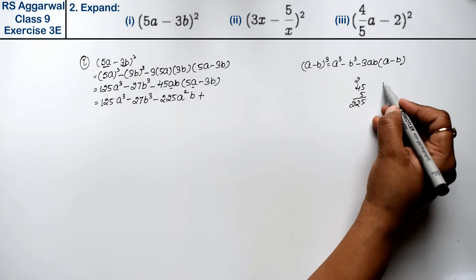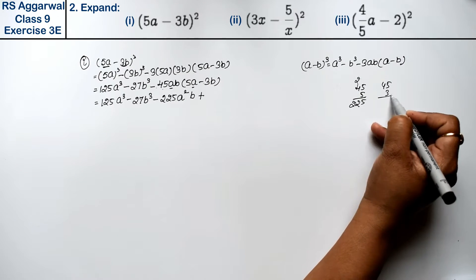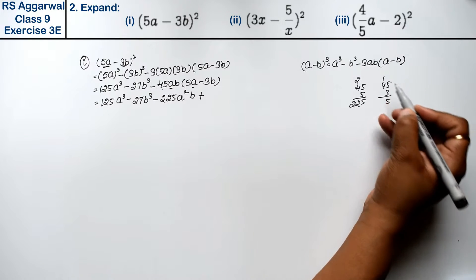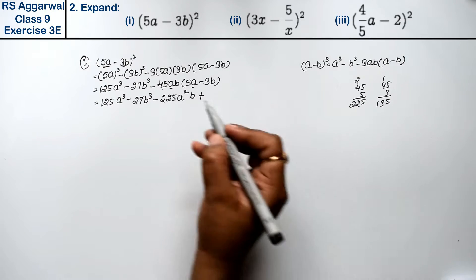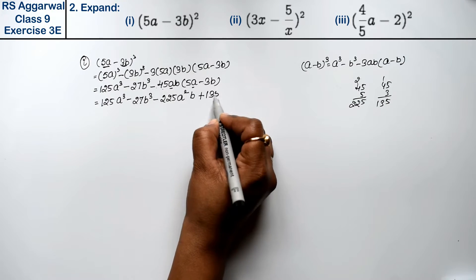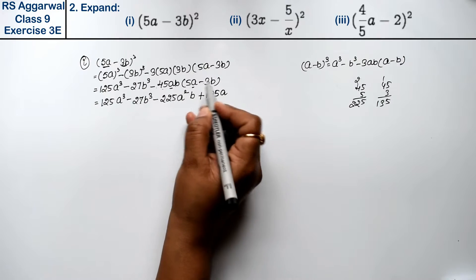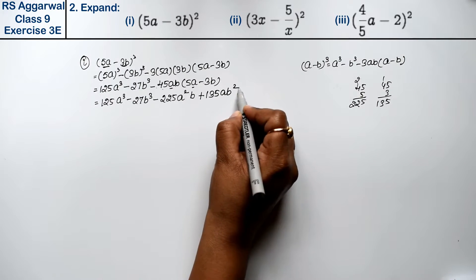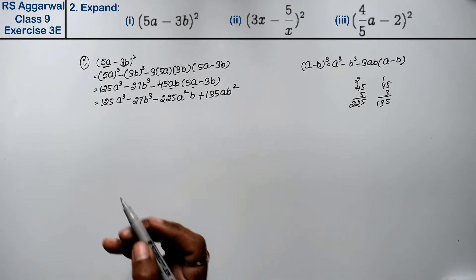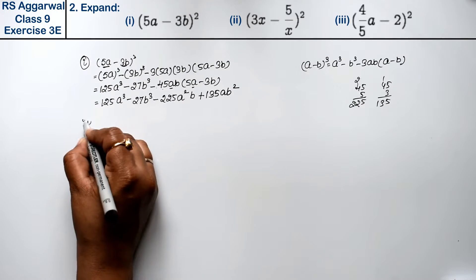45×3's is 45, 3×5's is 15, 3×4's is 12 and 135a²b minus minus plus 45×3's is 15, 3×4's is 12 and 135. A hai, b 2 baar hai toh b ki power 2. This is the answer. Let's do second part.